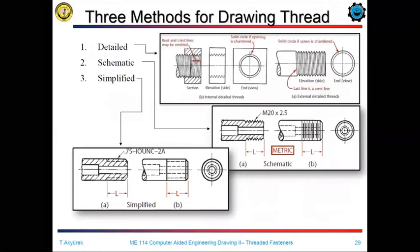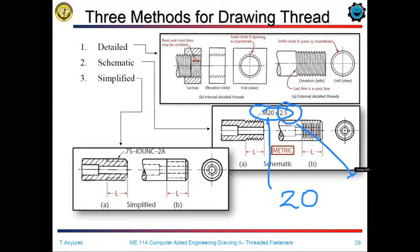The thread representation in engineering drawings for metric threads is simple — it shows the major diameter, which is the largest size, also called the nominal diameter. In our example, the nominal diameter is 20 millimeters, which is the largest diameter in the fastener, and the pitch size is 2.5 millimeters.